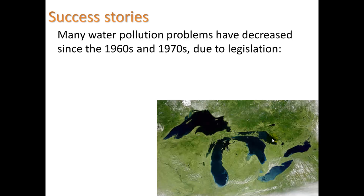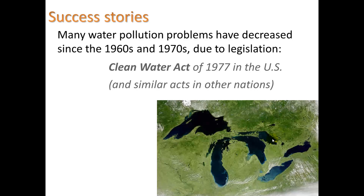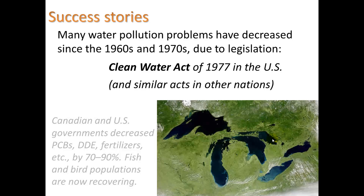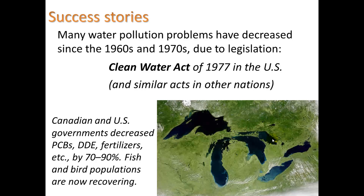There are success stories with water pollution. Water pollution hit its worst point in the 1960s and 70s, but many problems have decreased since then due to legislation, particularly the Clean Water Act of 1977 in the U.S. and similar acts in other nations. The Canadian and U.S. governments decreased PCBs, DDE (a breakdown product of DDT), and fertilizers in the Great Lakes by 70 to 90%, and fish and bird populations are now recovering. Notably, the Cuyahoga River in Ohio actually caught fire twice in the 70s from petroleum pollution.